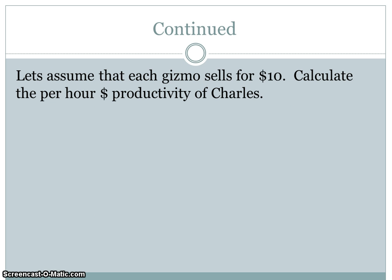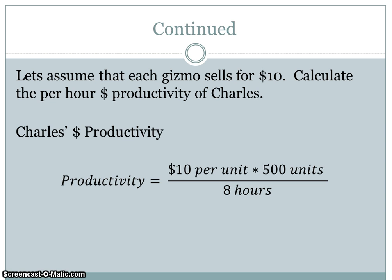Now let's assume that each gizmo sells for $10. Rather than calculating units per hour as we just did, let's calculate the per-hour dollar productivity for Charles. We convert the 500 units into dollars: 500 units times $10 per unit tells us how many dollars Charles generated. It took him eight hours, so his productivity was $625 worth of output per hour.